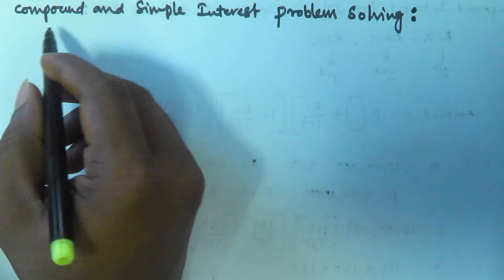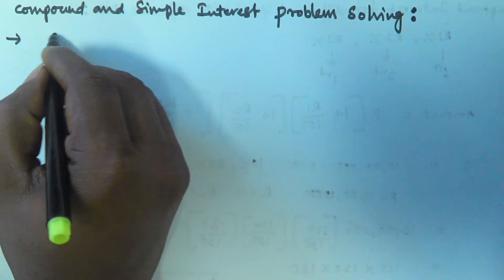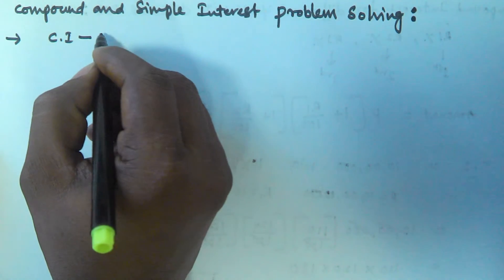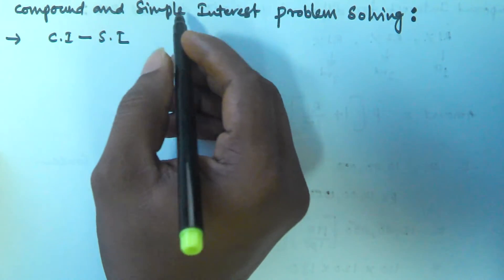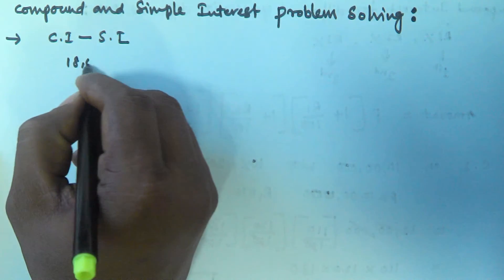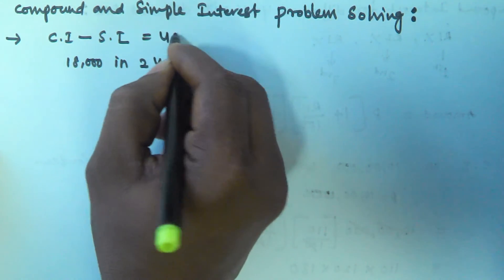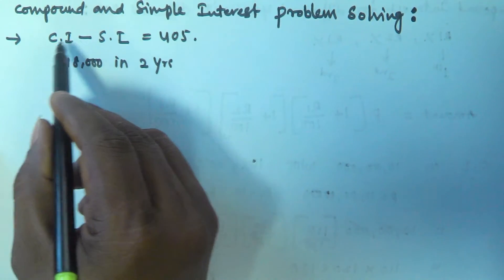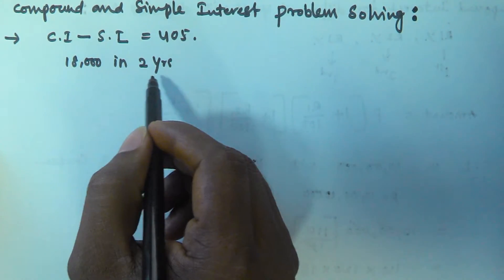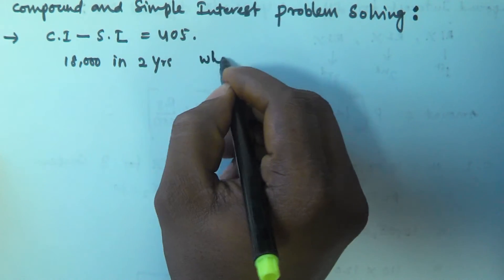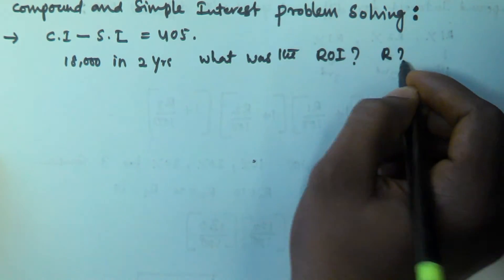Hello friends. In this video we will see a problem based on compound and simple interest. The difference between compound and simple interest acquired on an amount of 18,000 in 2 years was 405 rupees. So what was the rate of interest? We have to find the value of R.